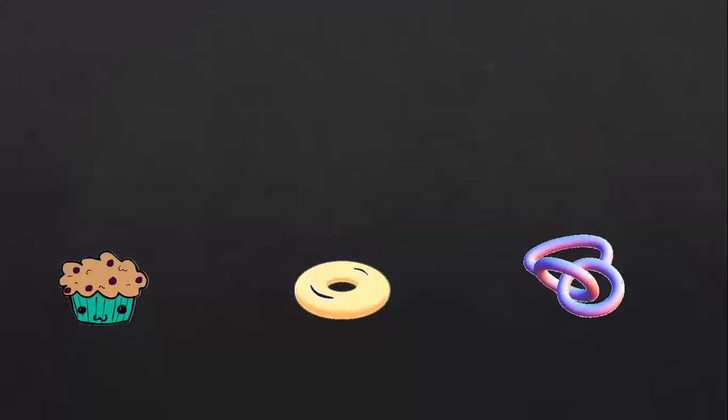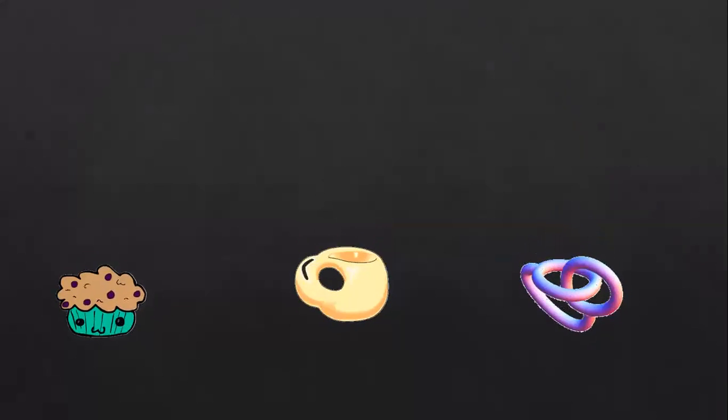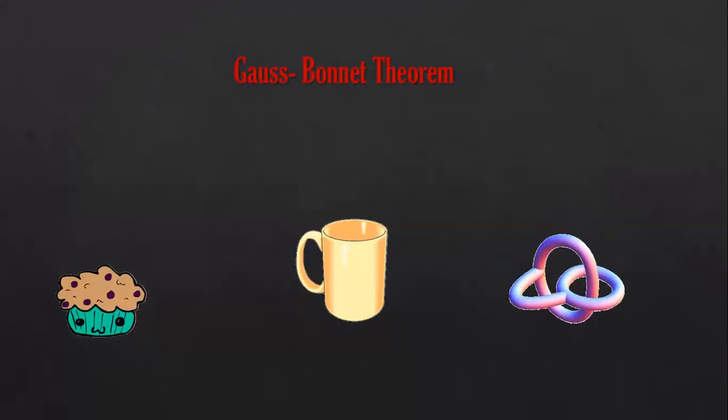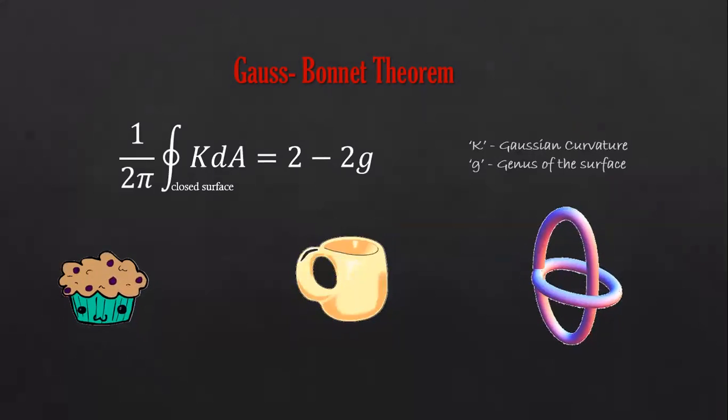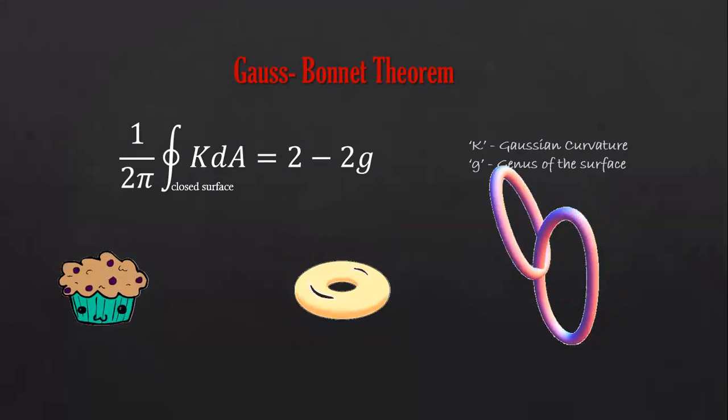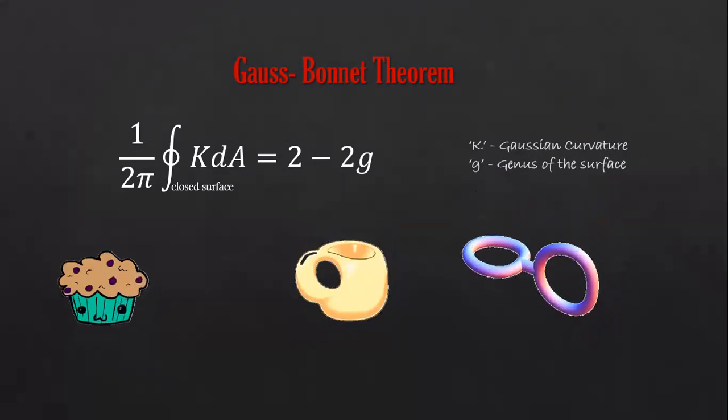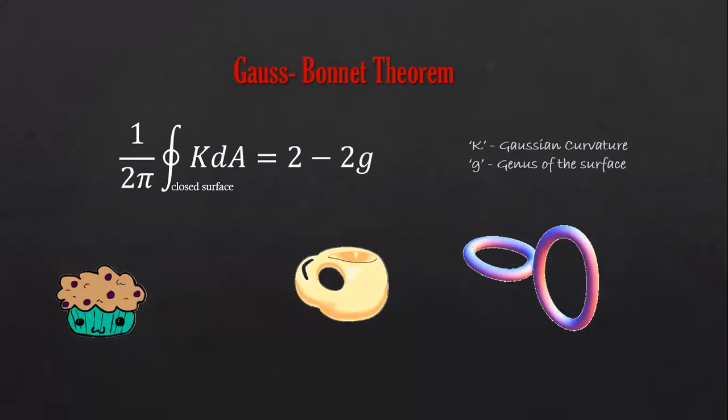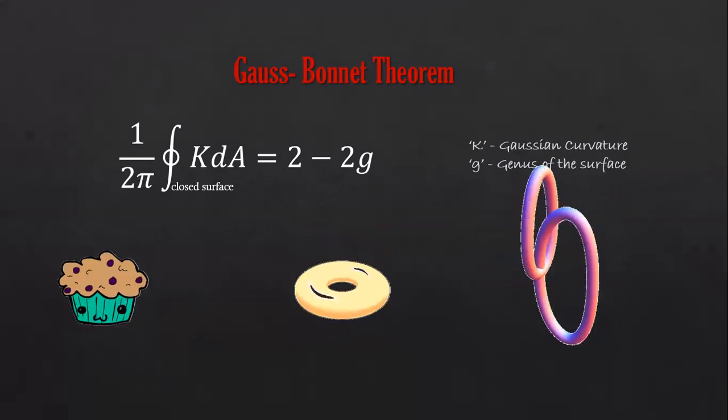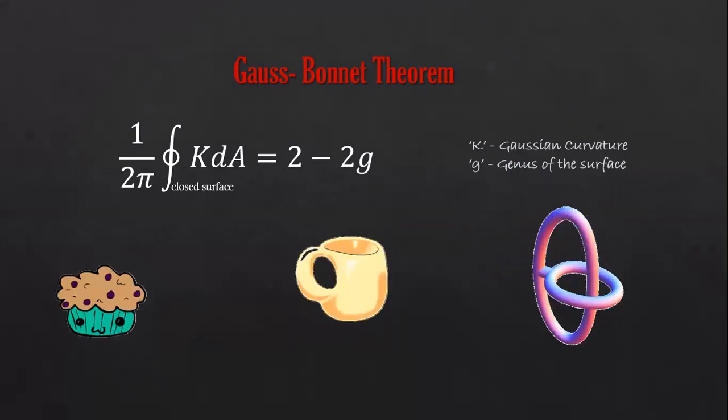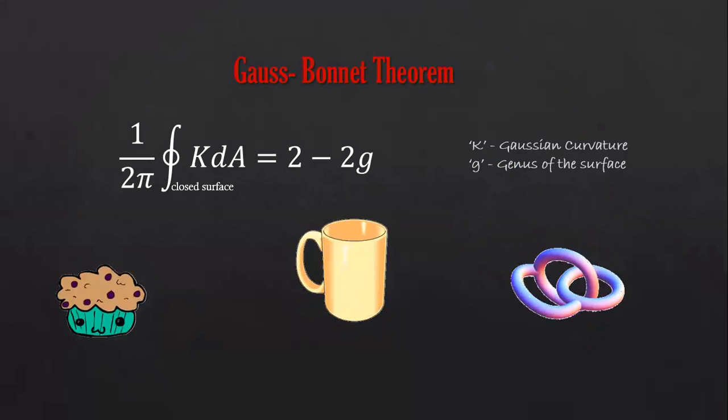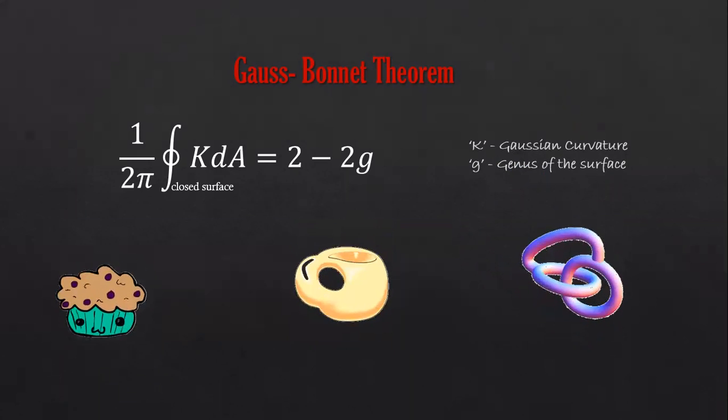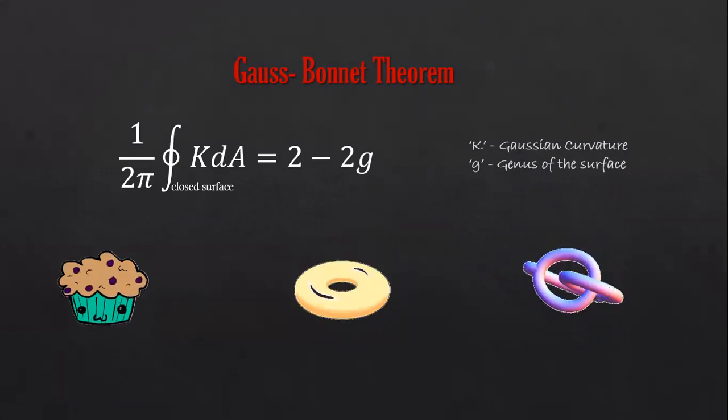The mathematical formulation of this invariance is given by the Gauss-Bonnet theorem, according to which when we carry out this integration over the entire surface, we get the topological invariant, which signifies the number of holes the object has. For example, the muffin having no hole has a genus of 0, the cup and the donut with one hole has a genus of 1, and this particular loop with two holes has a genus of 2.